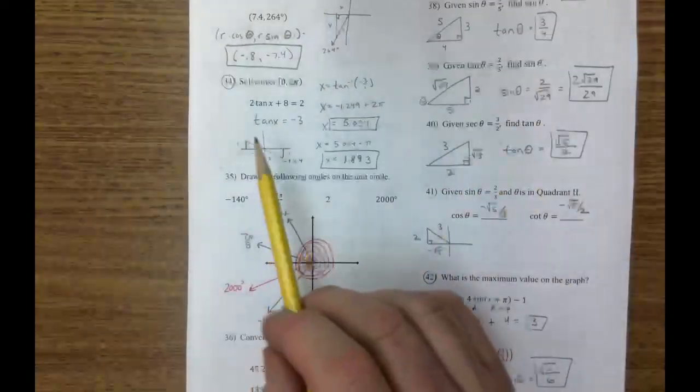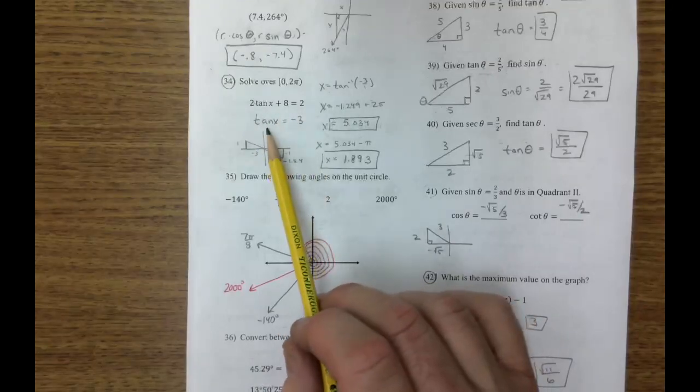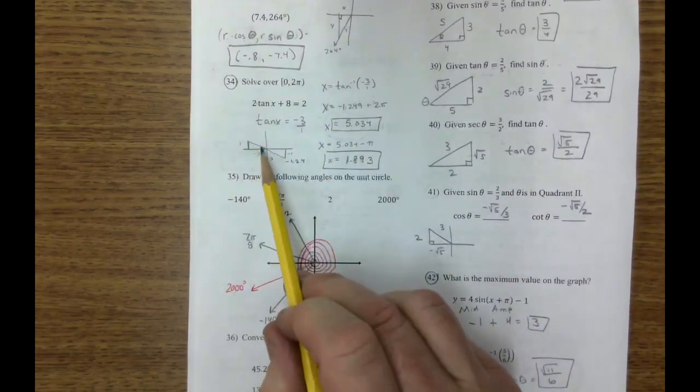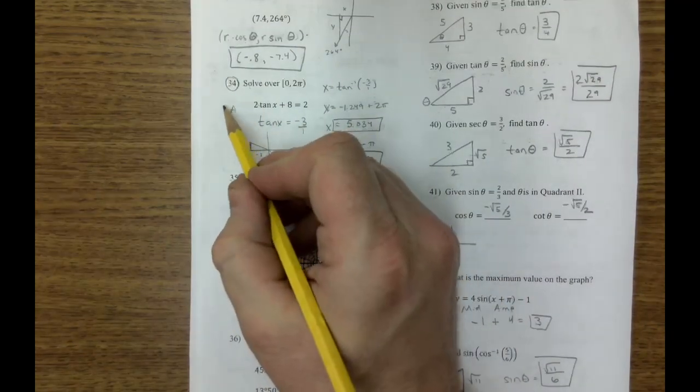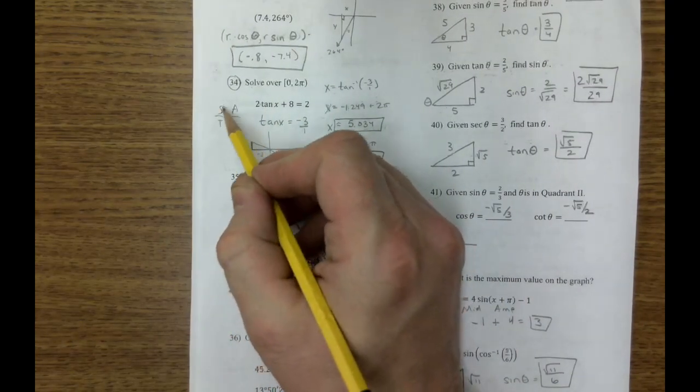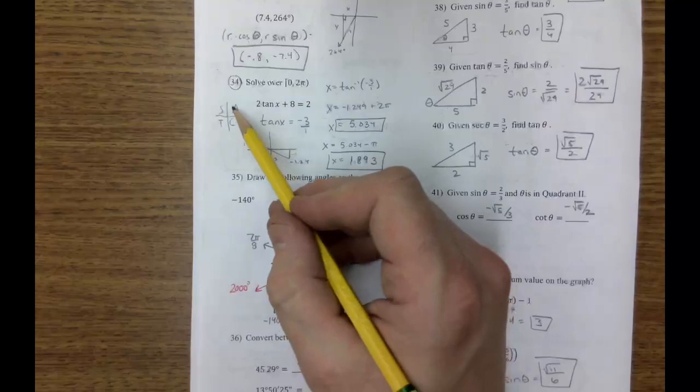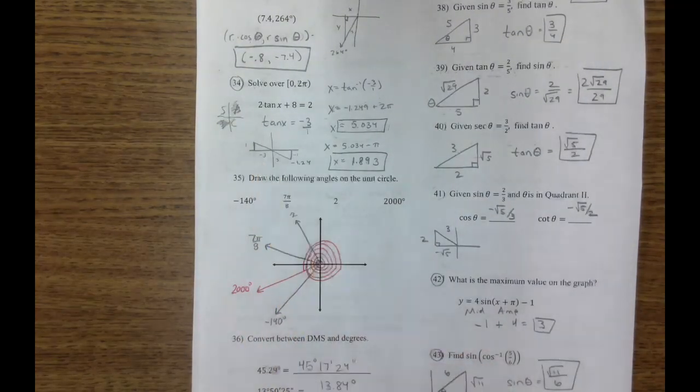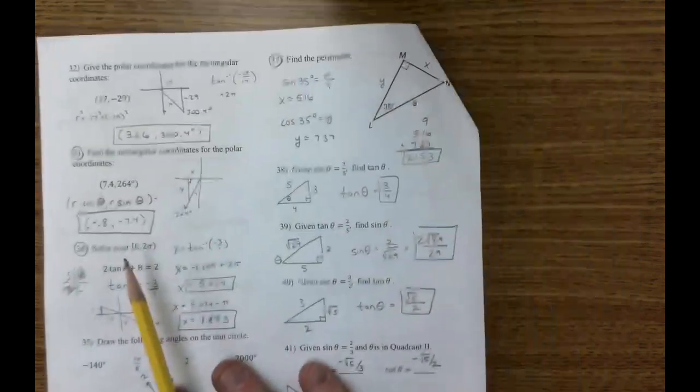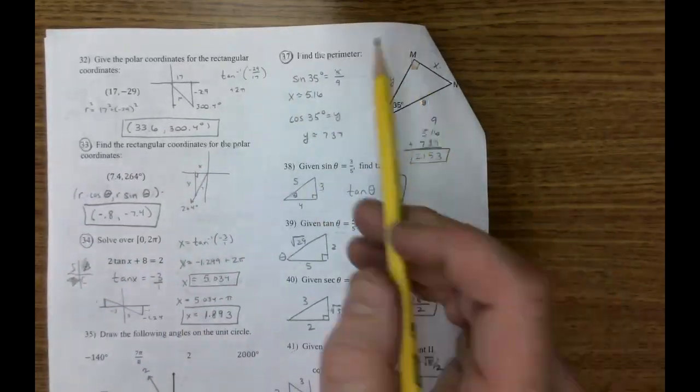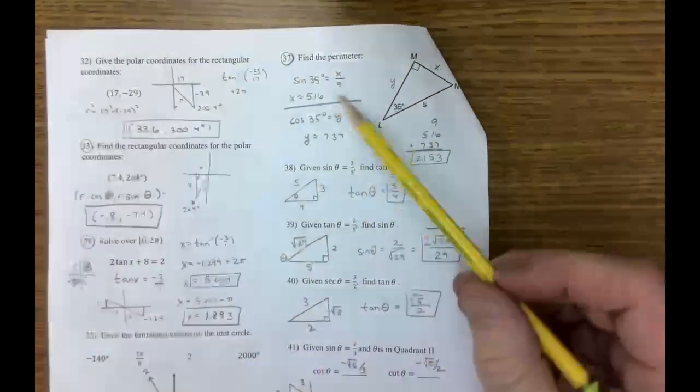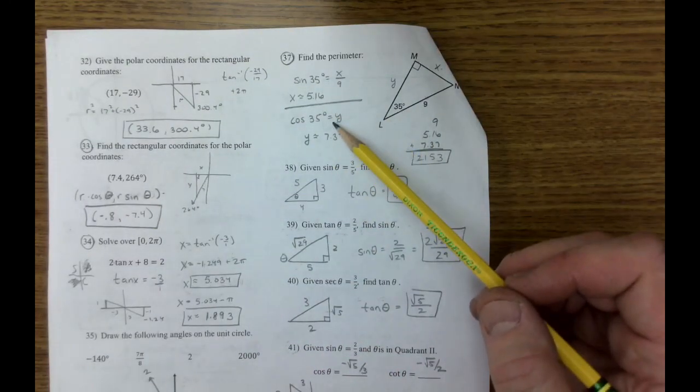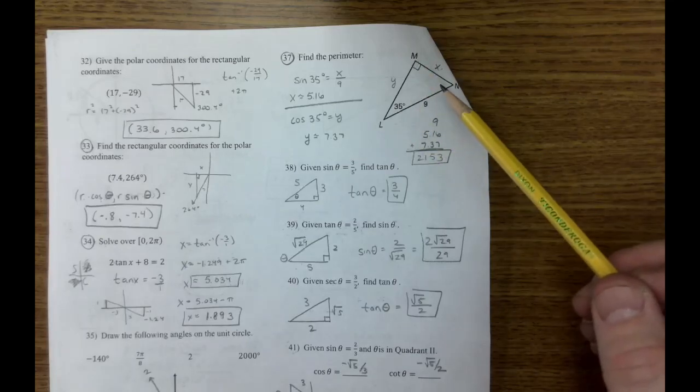Solving over the interval. Solve the equation, we get tangent is negative 3, which means negative 3 over 1. I draw my two triangles. Because if I put this up here, tangent is negative in those two quadrants. So those are where my two triangles are. 37, you just have to do two different trig equations to find what you need. And then you add up the perimeter.